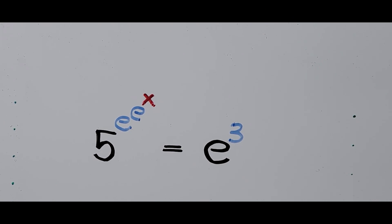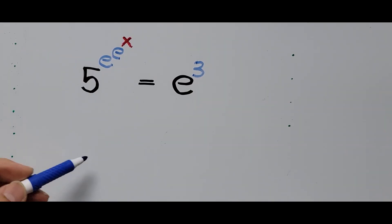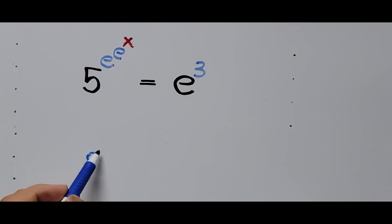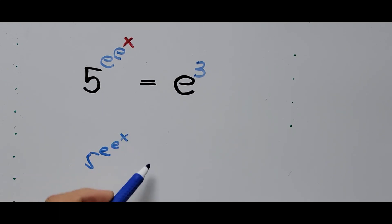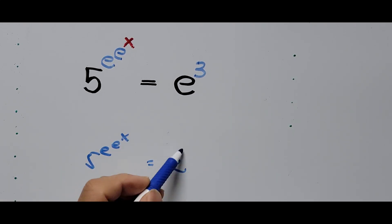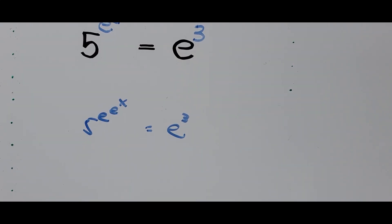To solve this equation we'll be taking the natural logarithm — or a common logarithm, take your pick — but probably the best way is to take the natural logarithm, since we cannot have a common base on both sides of the equation and therefore cannot use the laws of exponents. So let's take the natural logarithm of 5 to the power of e to the power of e to the power of x equals e cubed.